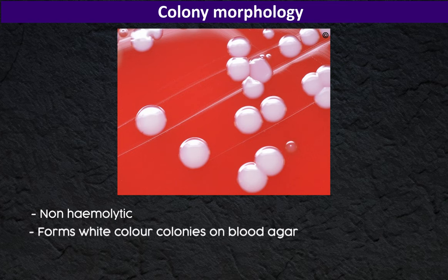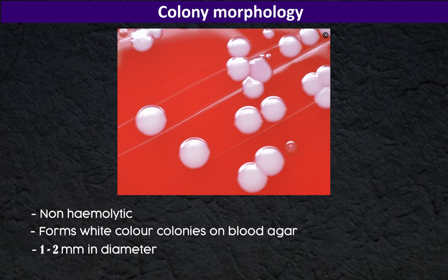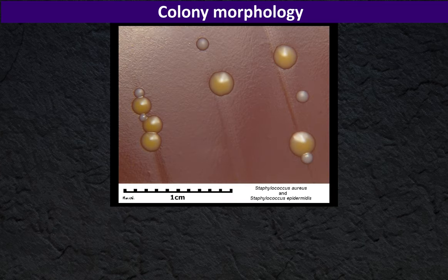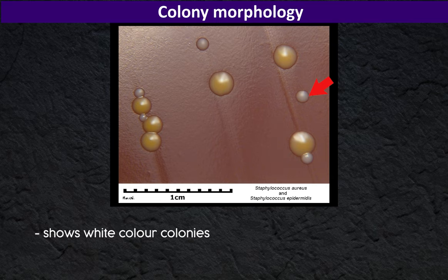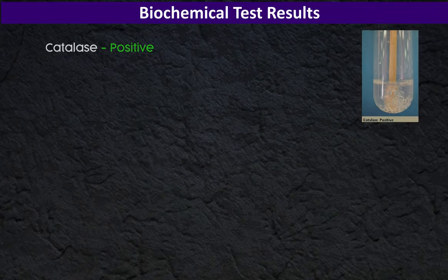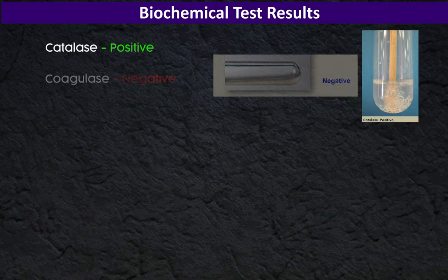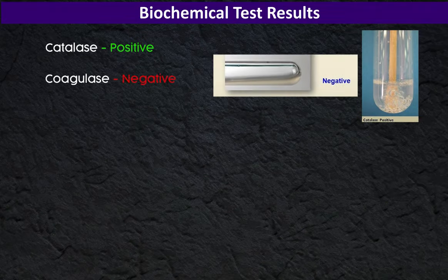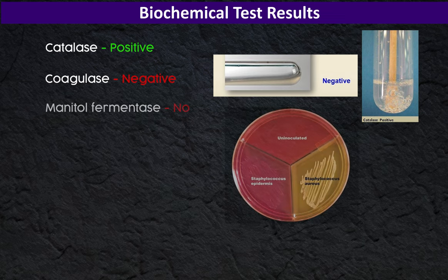Laboratory diagnosis: colony morphology — usually it is non-hemolytic and forms white color colonies on blood agar. The colonies are 1 to 2 millimeters in diameter. On chocolate agar, S. epidermidis also shows white color colonies.